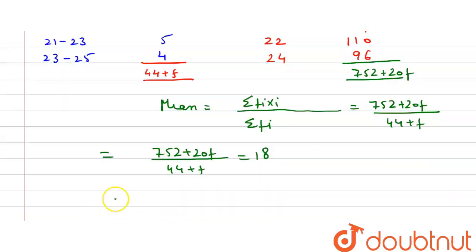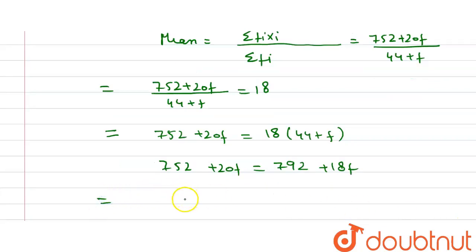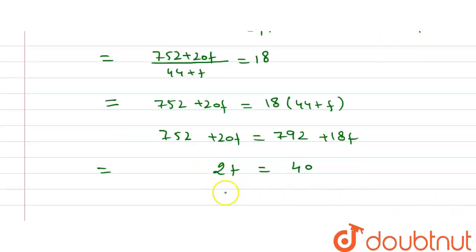So (752 + 20f) divided by (44 + f) equals 18. Multiplying both sides by (44 + f): 752 + 20f = 18 × (44 + f), which gives 752 + 20f = 792 + 18f. Simplifying: 20f − 18f = 792 − 752, so 2f = 40, therefore f = 20. So the interval 19 to 21 has a frequency of 20, meaning the number of children in that interval is 20. Our answer is f = 20. Thank you.